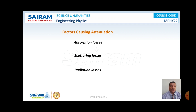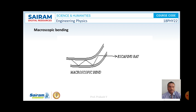There are three factors causing attenuation, that is loss of power suffered by the optical signal: absorption loss, scattering loss, and radiation loss.